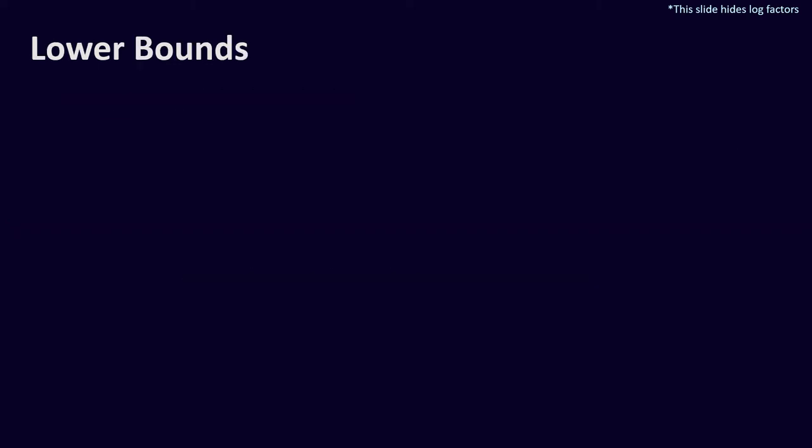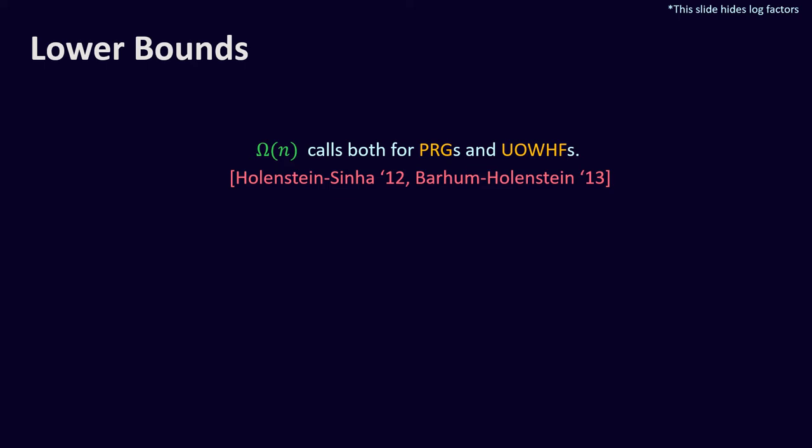Let's now see the best lower bounds we have. We have linear lower bounds on the number of calls for both PRG and universal one-way hash function black-box constructions from one-way functions. This should be compared with the best upper bounds, which are n-cubed for PRGs and n-to-the-13 for universal one-way hash functions. However, these lower bounds also apply when we assume the stronger assumption that the function is unknown regular, in which case the lower bounds are tight as they match the randomized iterate constructions.